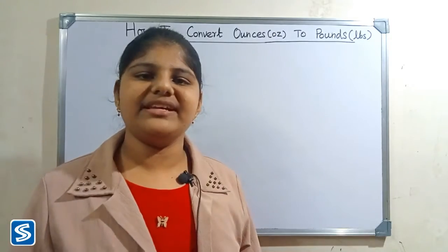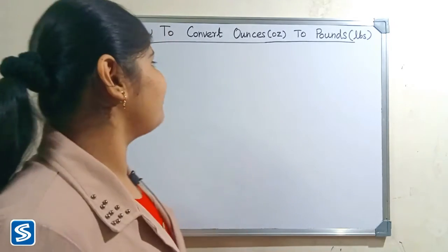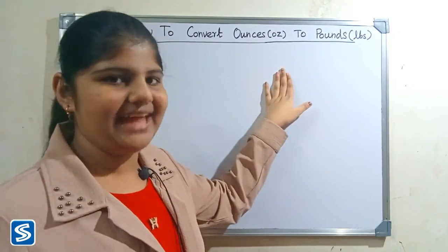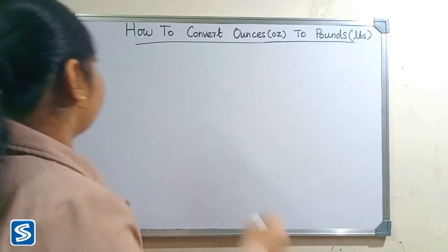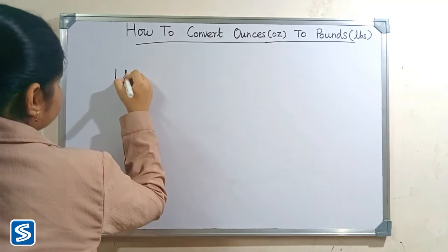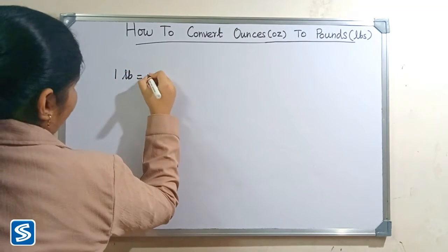Ounce and pounds are the imperial system mass units. The short form of ounce is OZ and the short form of pounds is LB or LBS. We already know that 1 pound is equal to 16 ounces.